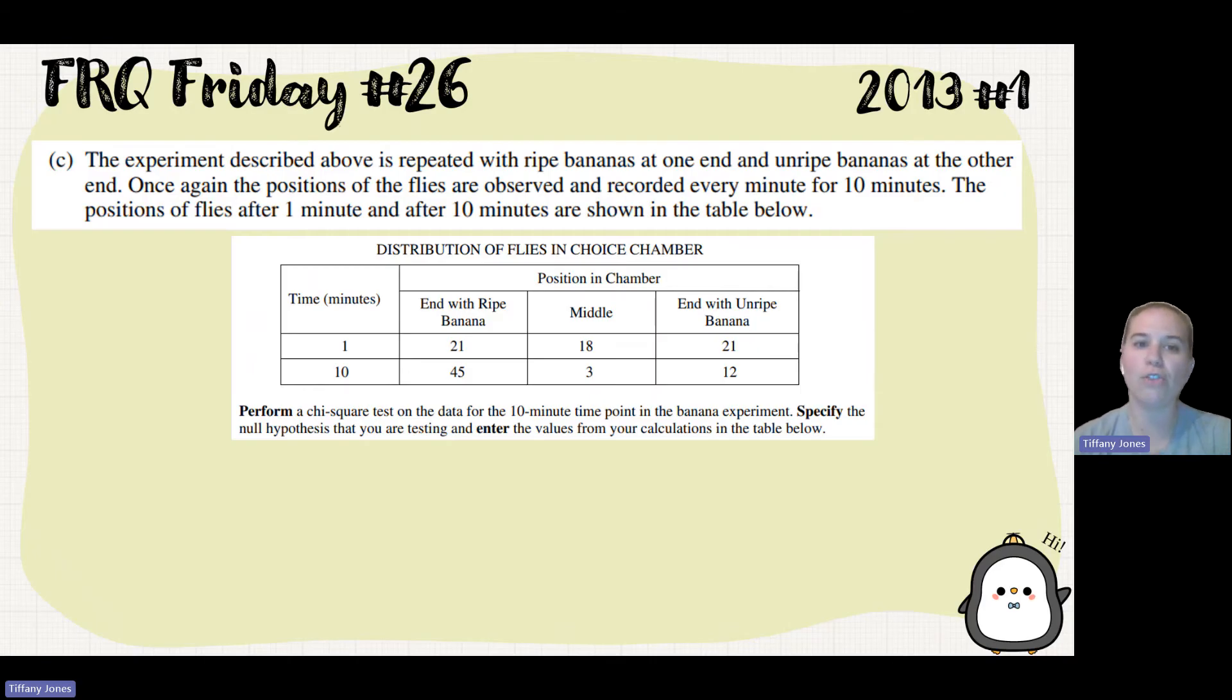So Part C says the experiment described above is repeated with ripe bananas at one end and unripe bananas at the other end. Once again, the positions of the flies are observed and recorded every minute for 10 minutes. The positions of flies at one minute and 10 minutes are shown in the table below.